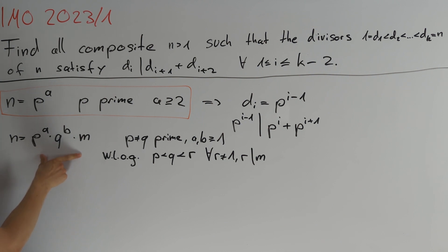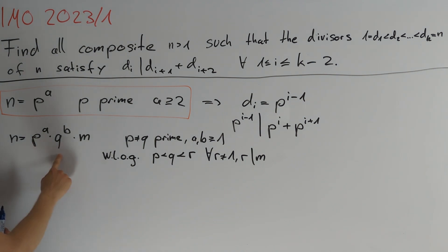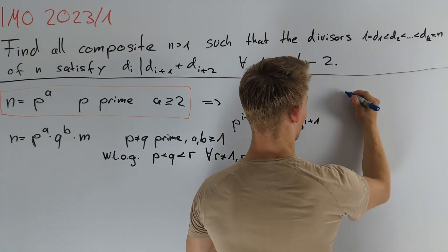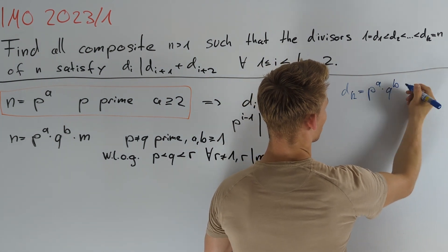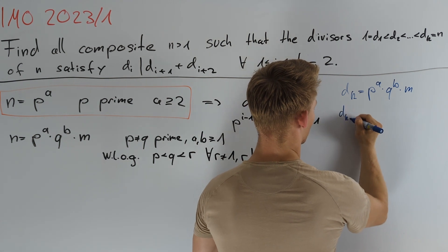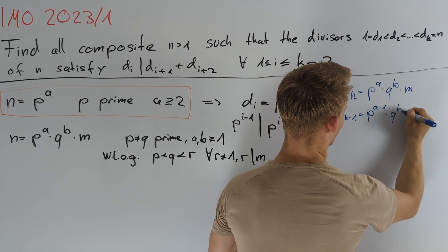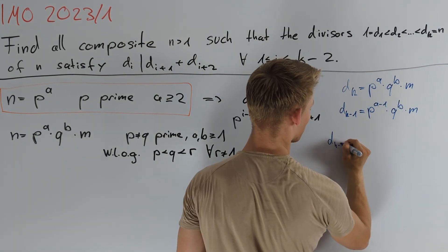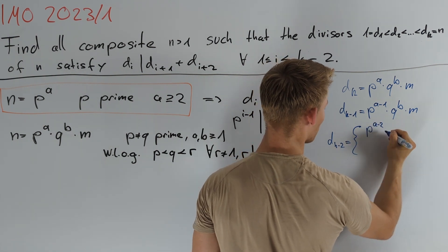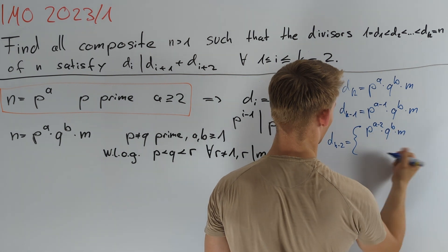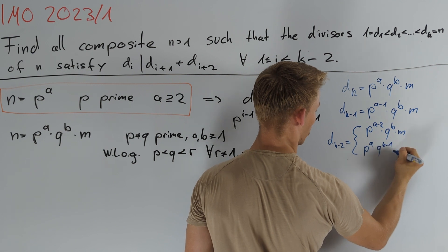Using this representation for n we can also find representations for di in terms of p, q and m. Firstly, dk equals p^a times q^b times m. Then dk-1 equals p^(a-1) times q^b times m. For dk-2 we have two different cases: in the first case it equals p^(a-2) times q^b times m, and in the second case it equals p^a times q^(b-1) times m.